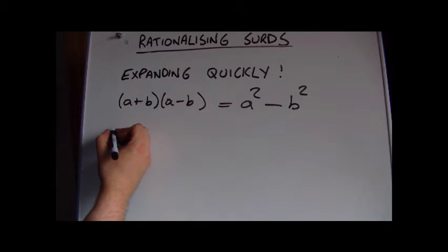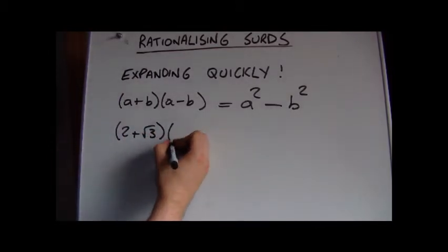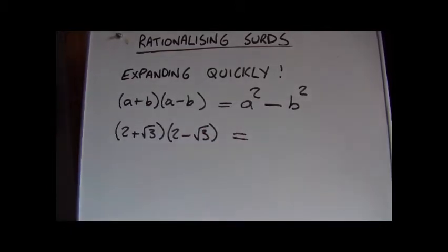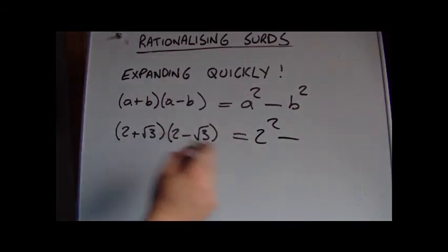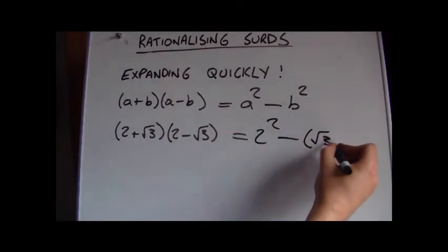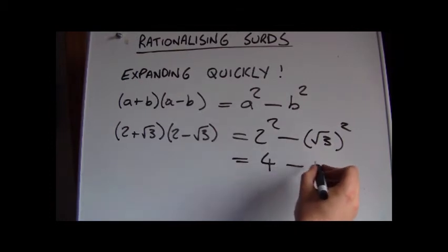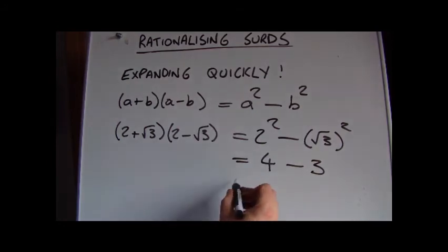So whenever we have surds of the form 2 plus root 3, and we multiply by the conjugate, if we remember the formula, there's no need to go through all of the multiplications. The answer is going to be the first term squared minus the second term squared, and we can simplify that in this case to 4 minus 3, if we square a square root, we're left with that.